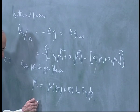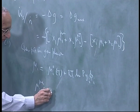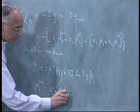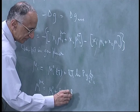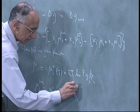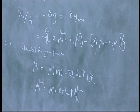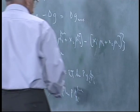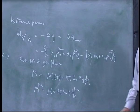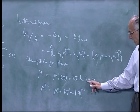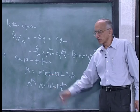Mui 0 of T plus RT ln P yi times phi i. And mui pure is again mui 0 plus RT ln P times phi i pure. Mui 0 is the chemical potential of pure i at the temperature of the mixture at one atmosphere pressure.